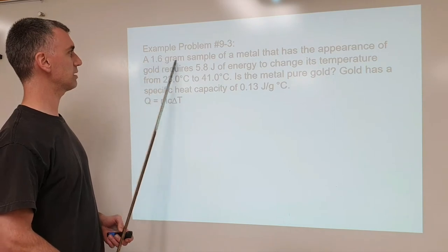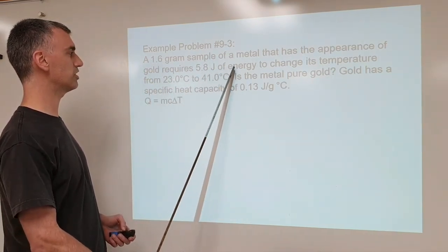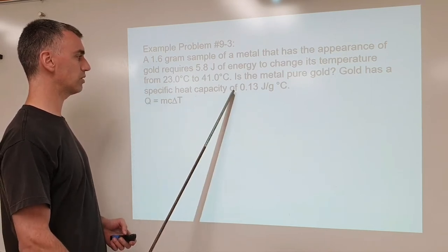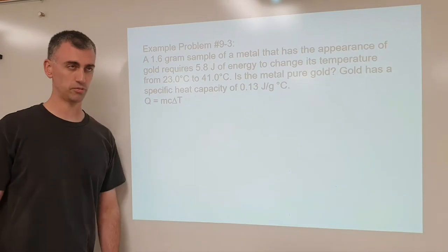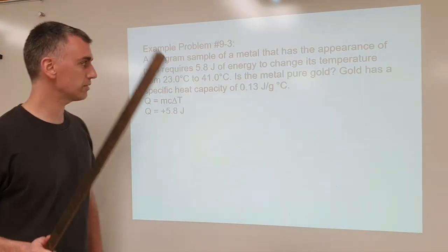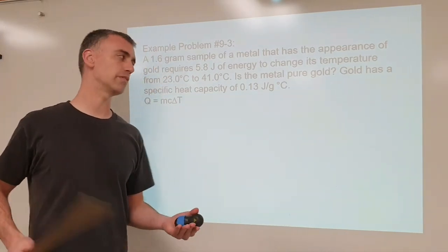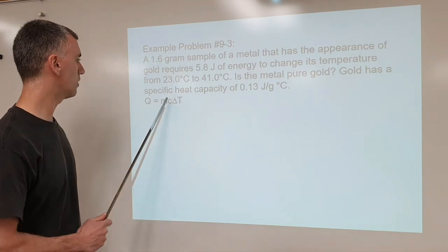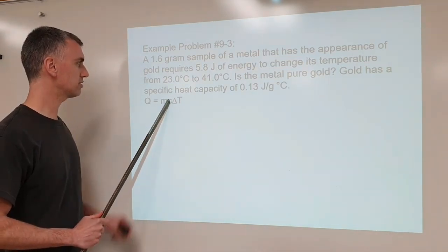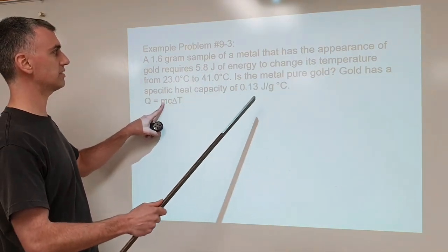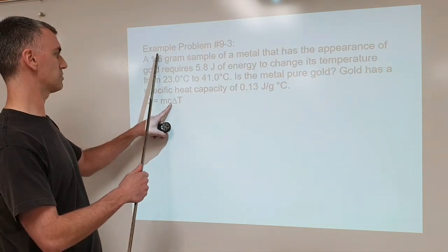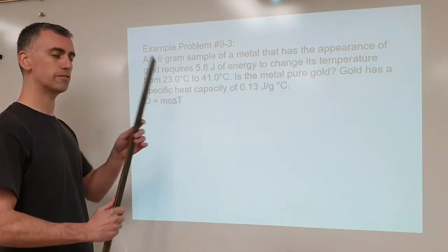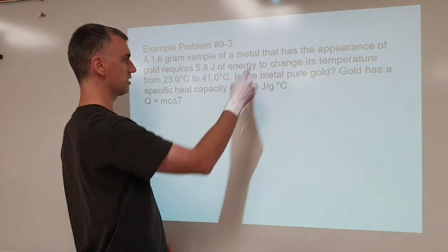Example 9-3: a 1.6 gram sample of metal that has the appearance of gold requires 5.8 joules of energy to change its temperature from 23.0 to 41.0 degrees. Is it pure gold? Gold has a specific heat capacity of 0.13 joules per gram degree Celsius. Every material has its own unique specific heat capacity, so if it matches gold's specific heat capacity, it must be gold. If it doesn't match, it must be something else. We're going to solve for specific heat capacity here.